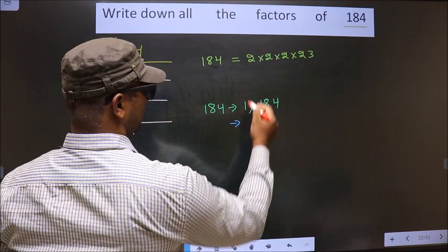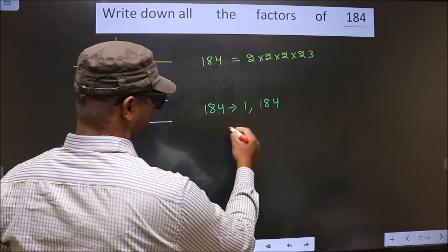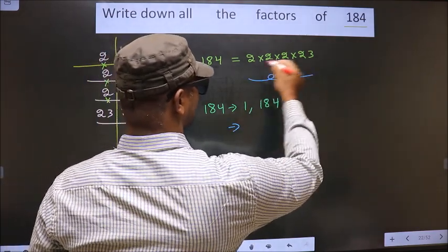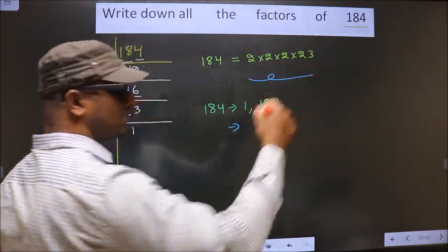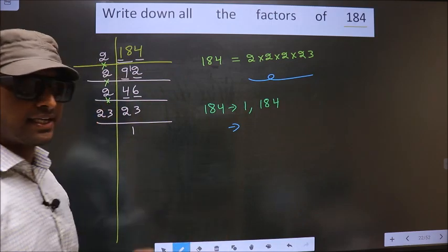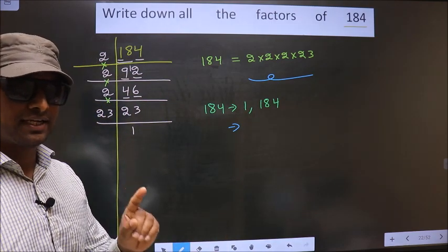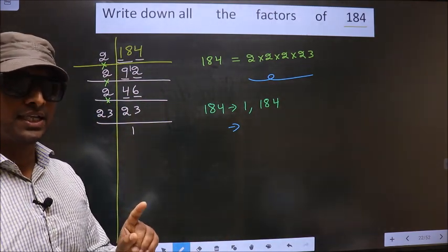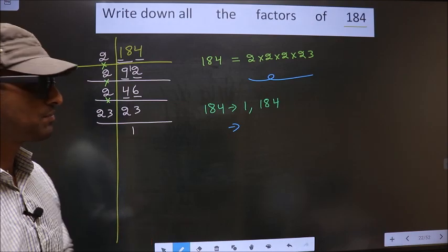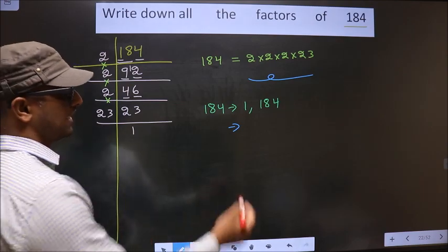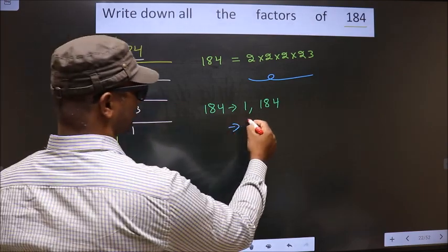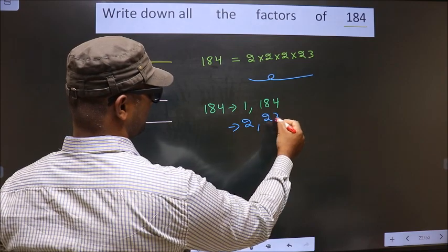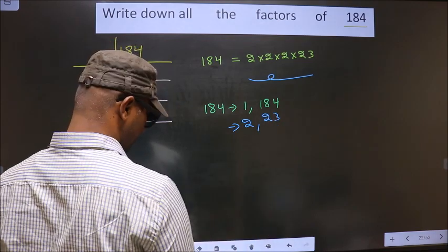From the prime factors, we now select the individual prime numbers. We select 2 and 23 as single-number factors.